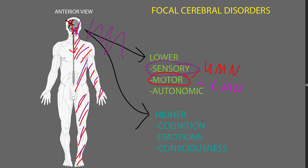A few cognitive functions also tend to be performed by just one side of the cerebrum, or at least mostly performed by one side in most people. For example, the cognitive function of language — turning thoughts into words and vice versa — in most people is performed by the left cerebral hemisphere, so that a lesion of the left side of the cerebrum may cause an abnormality of language function.